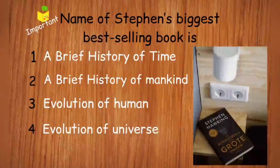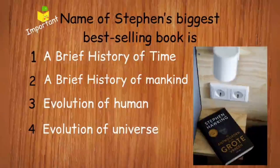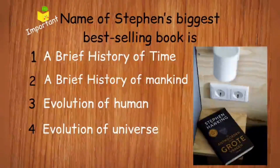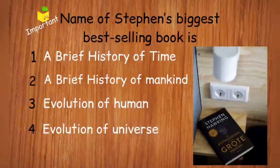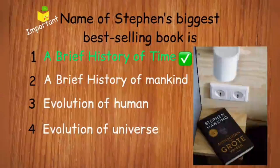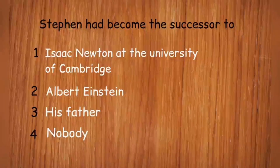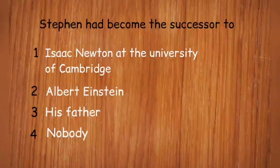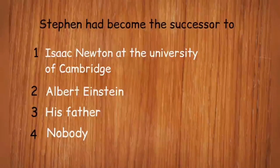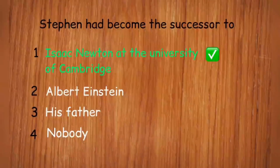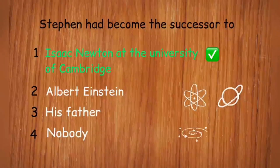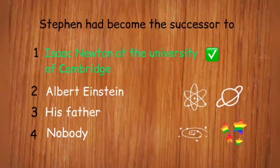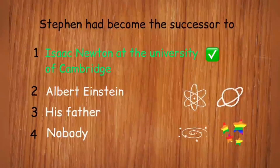Name Stephen Hawking's biggest best-selling book. It is 'A Brief History of Time'. Stephen had also become the successor to Isaac Newton at the University of Cambridge. He was a great scientist and astrophysicist who conducted extensive research on planets, stars, and the universe, and due to all these reasons he got the chair of Isaac Newton at the University of Cambridge.